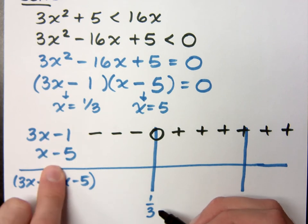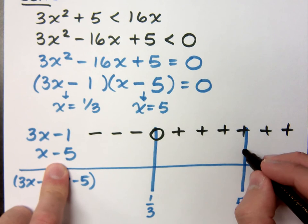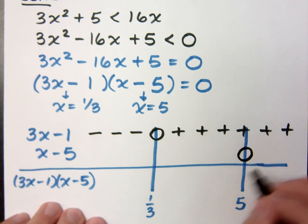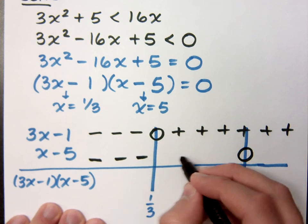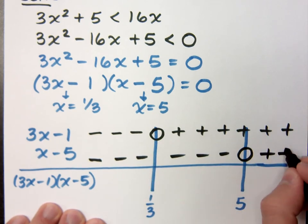Likewise here, x - 5. His gatekeeper is the value of 5. Since this is a positive 1, that means values on the left will be negative, and values on the right are going to be positive.